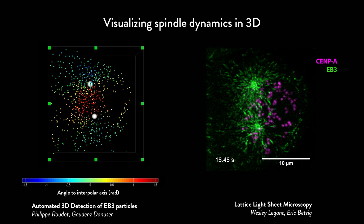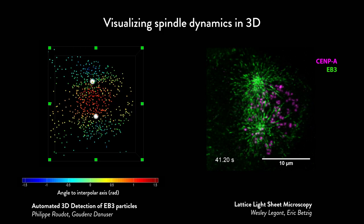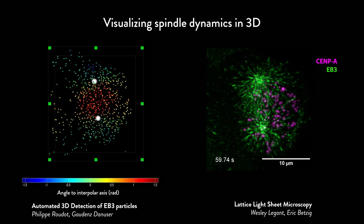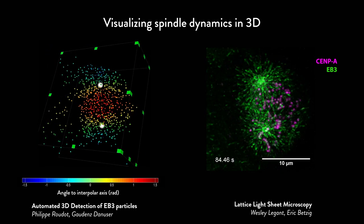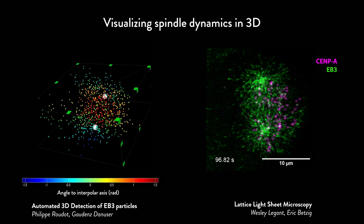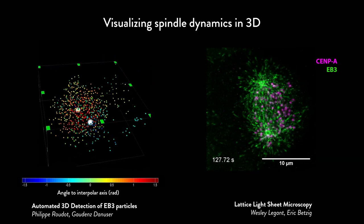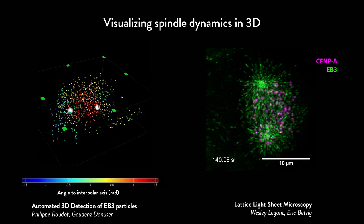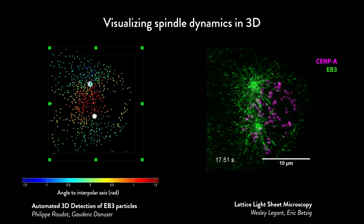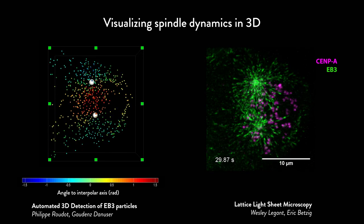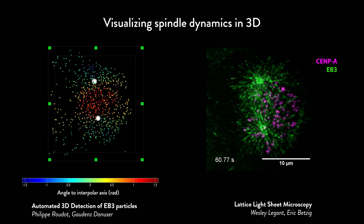Here you can see the growing tips of individual microtubules. We can detect all of these in every movie frame and analyze their distribution within the spindle. By doing that, we were able to determine what fraction of microtubules was generated in different regions of the spindle. The results were very surprising to us: the fraction that came from Augmin-dependent generation on the walls of pre-existing microtubules was much higher than anyone was expecting.